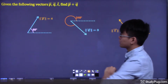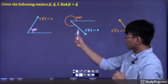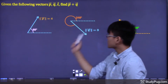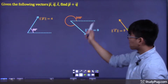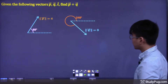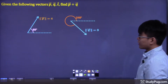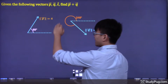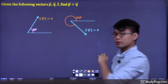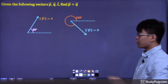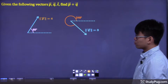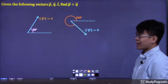Given three vectors — vector p, vector q, and vector t — we want to find vector p plus vector q. As you can see, we're only given the magnitudes and the direction angles of these vectors. We're not given the components of these vectors.